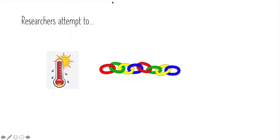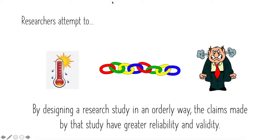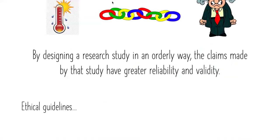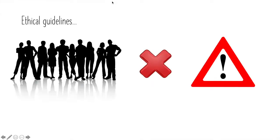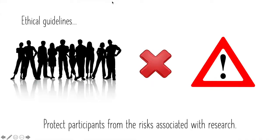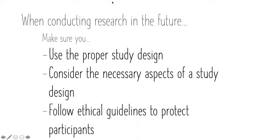Researchers attempt to find links between circumstances and behaviors, and they must do so in an orderly way so that their conclusions are considered valid and in a way where those who they are studying are not put at risk. Next time you're conducting research, be sure you are doing so properly and while following ethical guidelines.